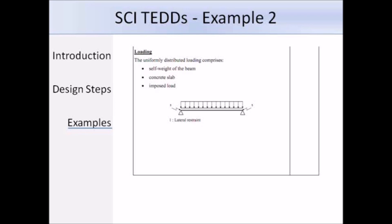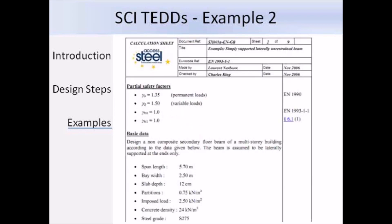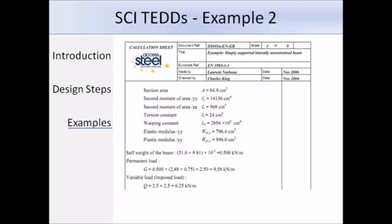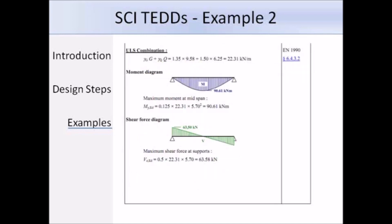So here are the partial factors and some of the basic data about the beam. And we're dealing with a 356 times 171 times 51 UB in grade S275 steel, and there are just some of the section properties, and some more section properties, and then the permanent and variable loads here are calculated at the bottom. So once the permanent and variable loads are worked out, the maximum bending moment can be worked out. In this case, the maximum design bending moment is 90.61 kNm from ULS curves at mid span.